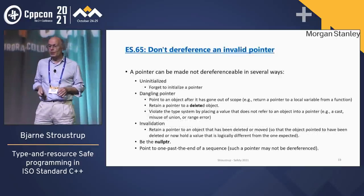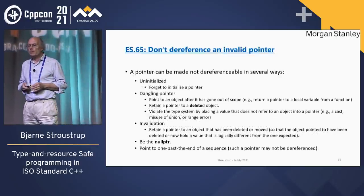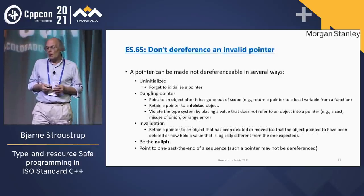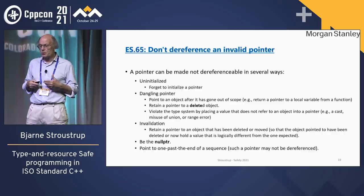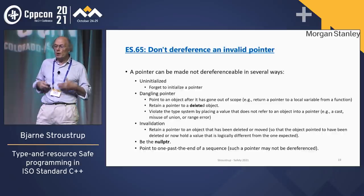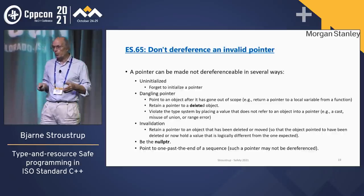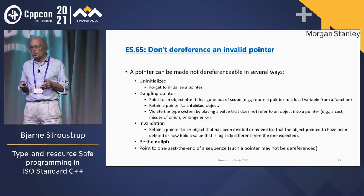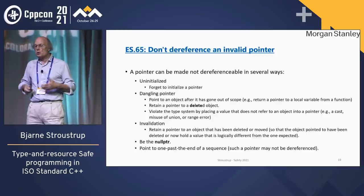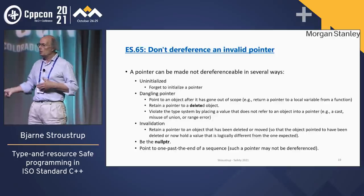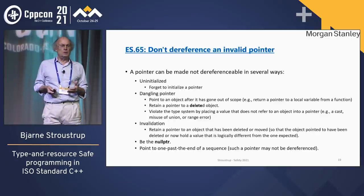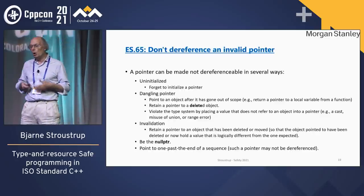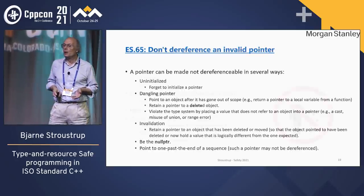Don't dereference an invalid pointer. You can make a pointer non-dereferenceable in several ways: uninitialized — but we stop uninitialized values from existing; dangling pointers — but we stop them from dangling; invalidation — retain a pointer, delete or relocate the resource. They can be the null pointer or we can be one past the end of a sequence. So let's look at that.